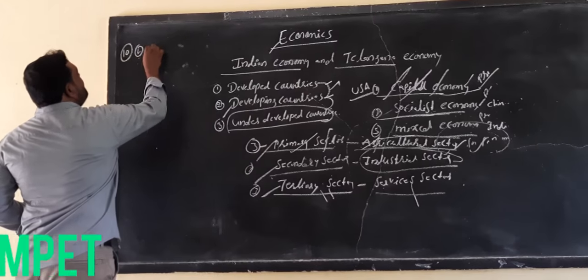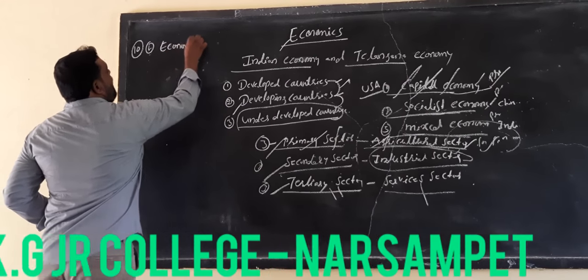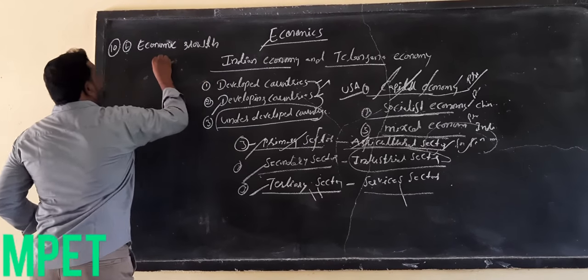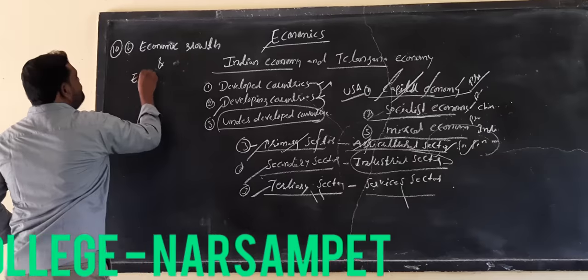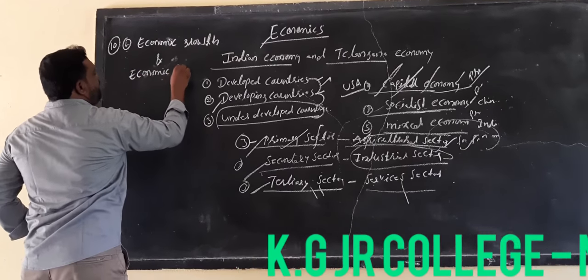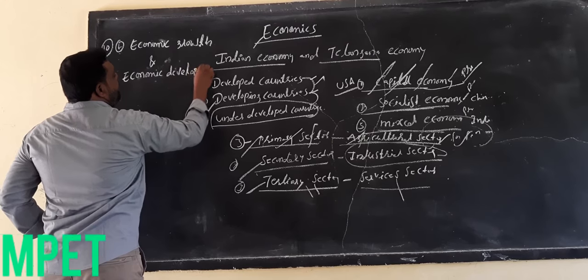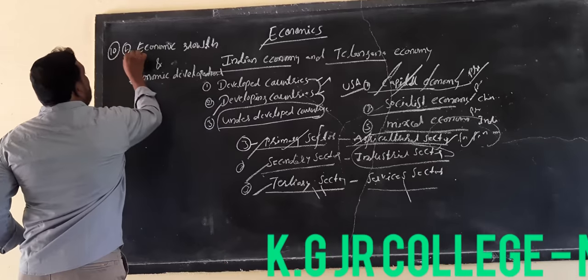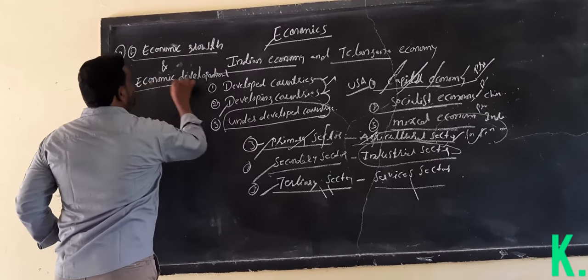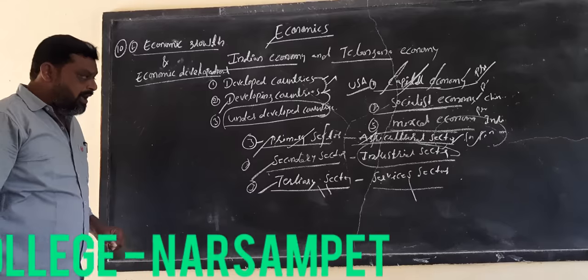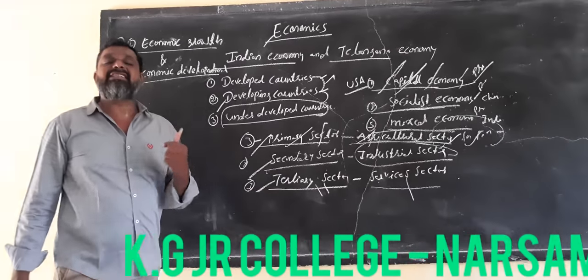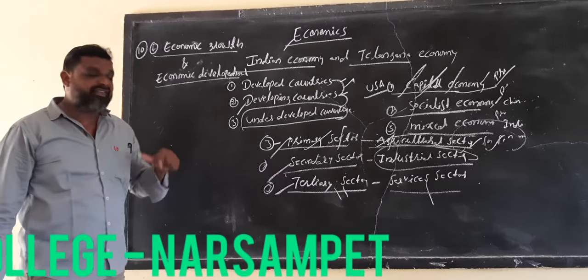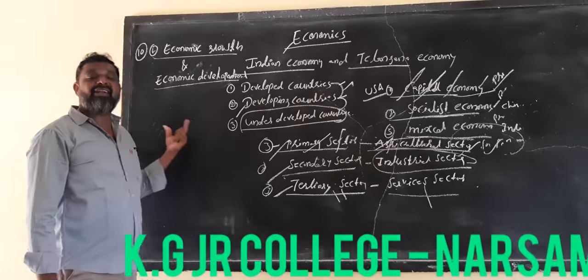The first lesson is Economic Growth and Economic Development. Before 1960s, these two words were used as the same — as synonyms. After 1960s, they were given different types of meaning.